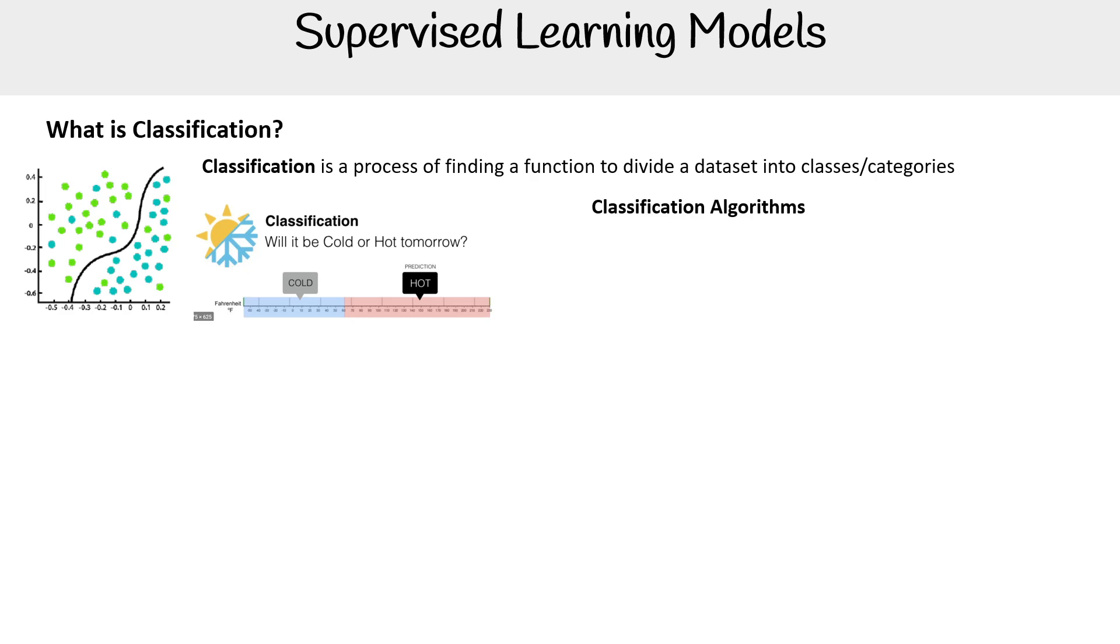We have different algorithms we can use like logistic regression, K-nearest neighbors, support vector machines, kernel SVM, Naive Bayes, decision tree classification, random forest classification. So we're listing a lot more here.